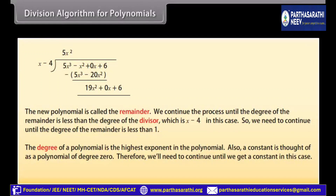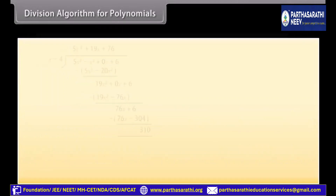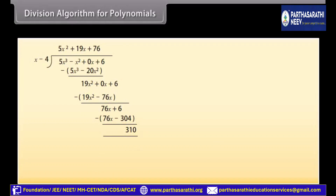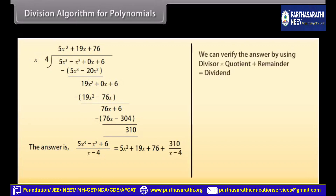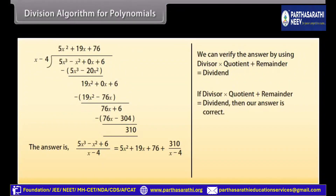A constant is thought of as a polynomial of degree 0. We continue the process until we get a constant remainder. The answer is: (5x cubed minus x squared plus 6) divided by (x minus 4) equals 5x squared plus 19x plus 76 plus 310 upon (x minus 4). We can verify the answer using: divisor times quotient plus remainder equals dividend.